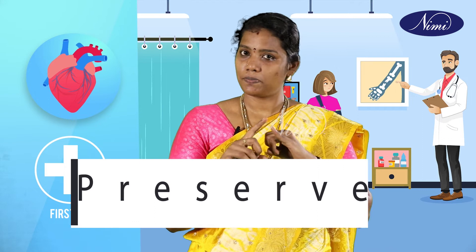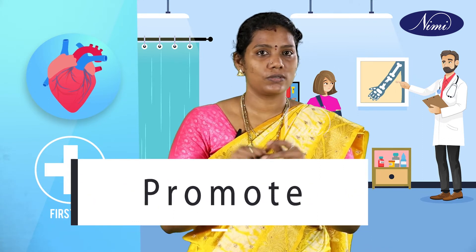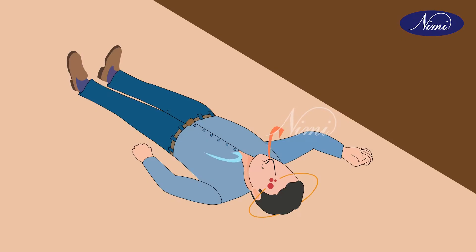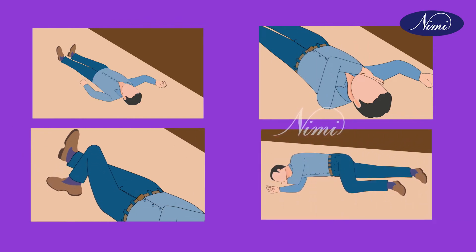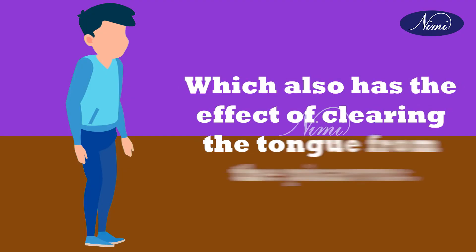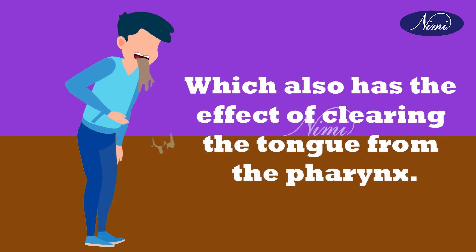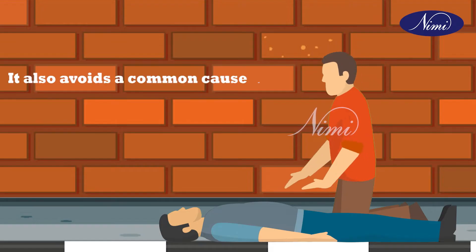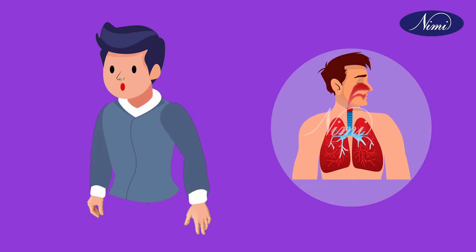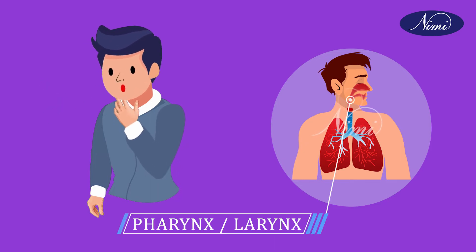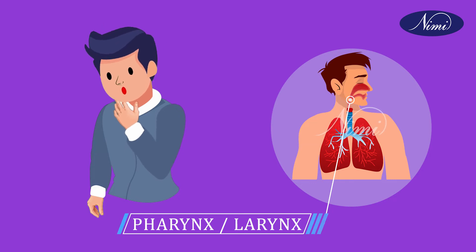The basic key aim of first aid comes with three key points: Preserve, Prevent, and Promote. Preserve life: if the patient is breathing, a first aider would normally place them in the recovery position with the patient leant over to their side, which also has the effect of clearing the tongue from the pharynx. It also avoids a common cause of death in unconscious patients, which is choking on regurgitated stomach contents. The airway can also become blocked through a foreign object lodged in the pharynx or larynx, commonly called choking.